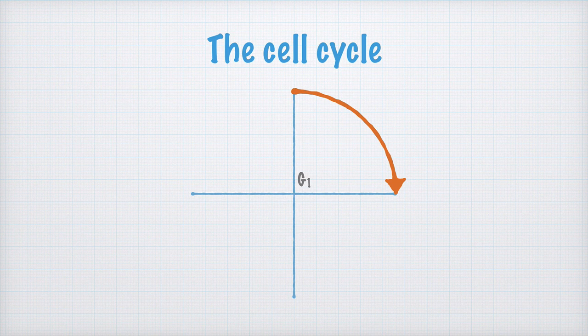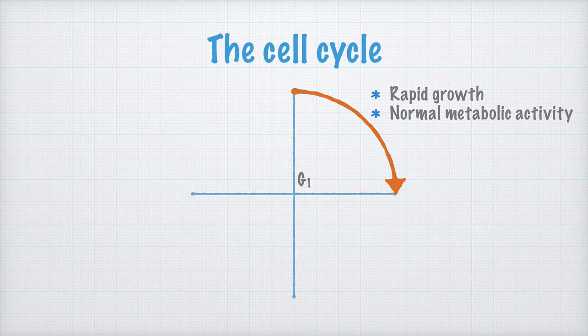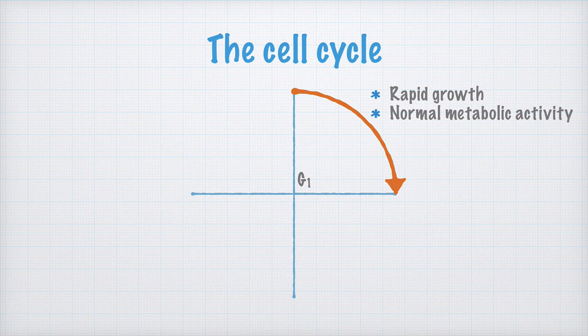During the G1 phase, the cell grows rapidly, and the cell has its normal metabolic activity. That means that the cell does what it's supposed to do. Sometimes, the cell stops dividing completely, and only has its normal metabolic activity. This is often called the G0 phase.